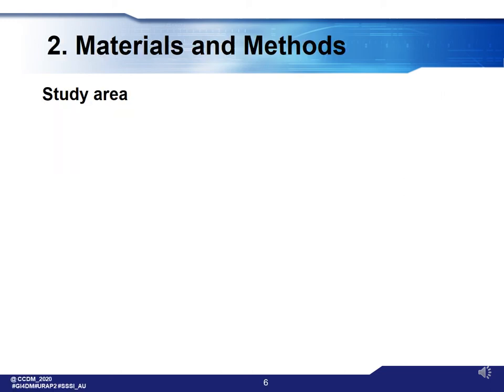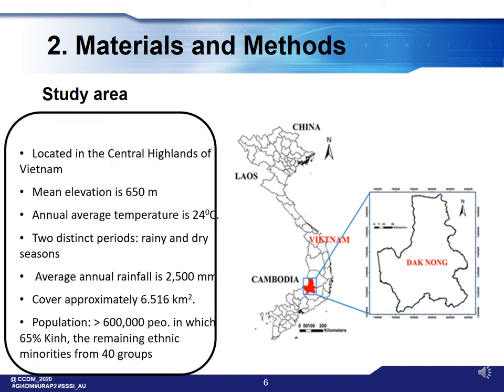For materials and methods, the study area is Dagnon province, located in the central highlands of Vietnam. The area covers around 6,500 km² and has a population of more than 600,000 people, of which 65% are Kinh and the remaining are ethnic minorities from over 40 groups. About 30 years ago there were only two to three minority groups, but in recent years many more groups have moved to Dagnon province from northern Vietnam to make a living.